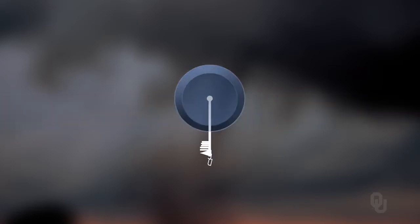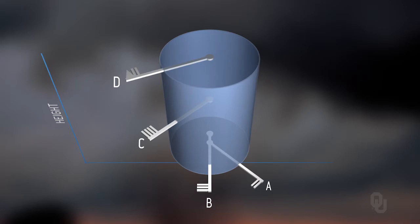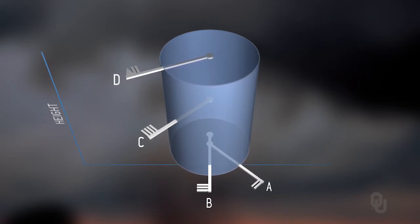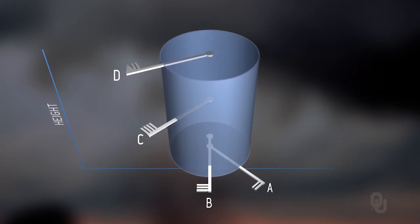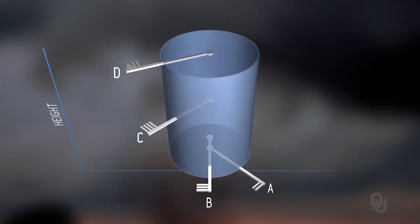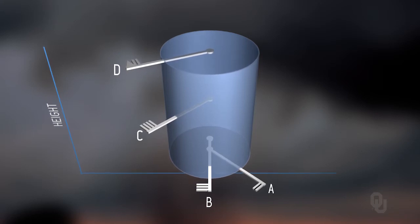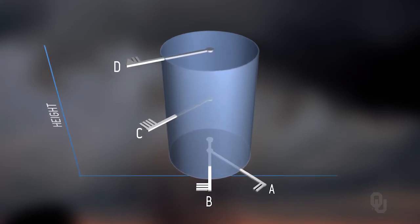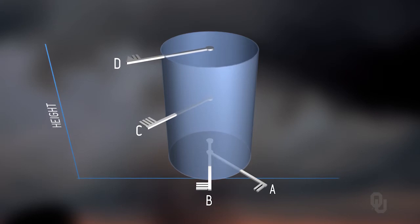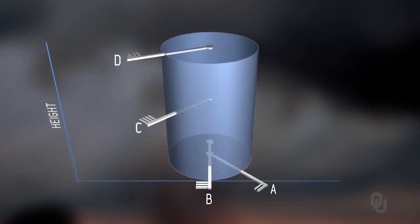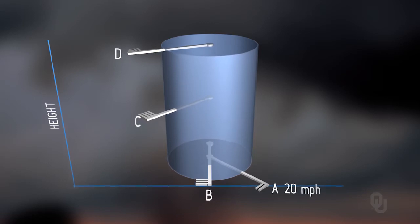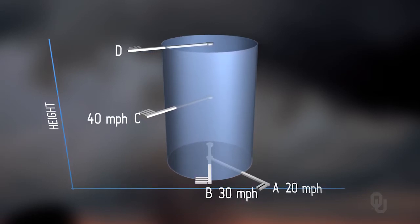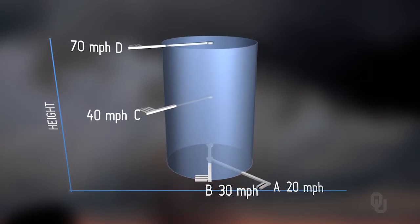As an example — not exact — wind coming in from the southeast at lower levels, then from the south a bit higher, from the southwest even higher, and the jet stream above that. You need that directional wind shear — notice the direction changes. You also need wind speed shear: 20 miles per hour at the surface, then 30, then 40, and 70 miles per hour at the highest level.